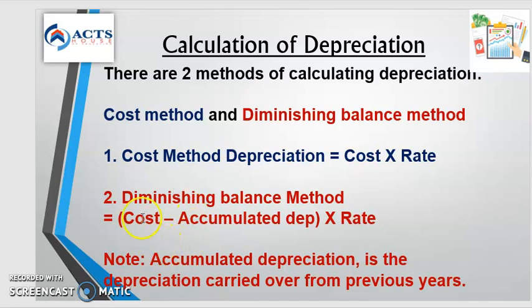The diminishing balance method is a little bit tricky. It's the cost of the asset minus accumulated depreciation, times the rate. Accumulated depreciation is the depreciation of that particular asset over the years. So if the asset was bought in 2016 and we are now in 2020, it would have depreciated maybe 10,000 a year. By now it would have depreciated 40,000 — that 40,000 is called accumulated depreciation.